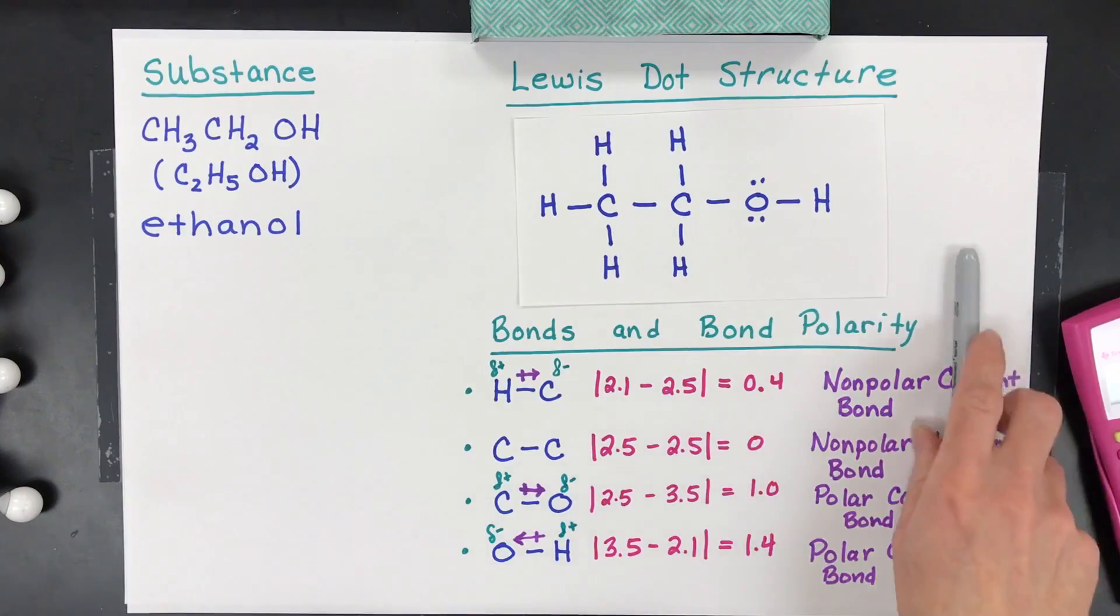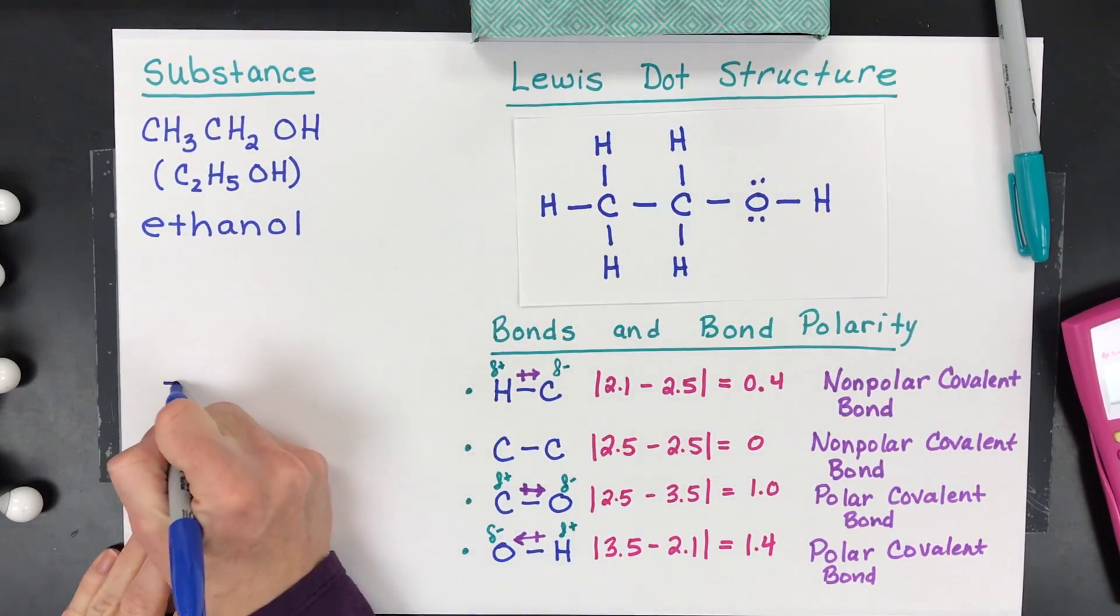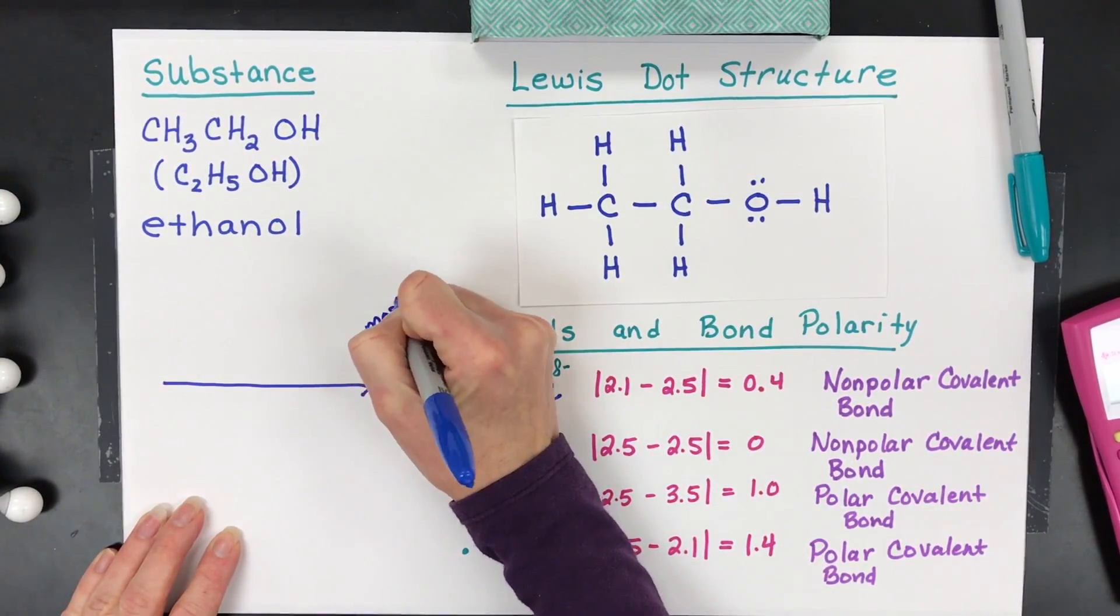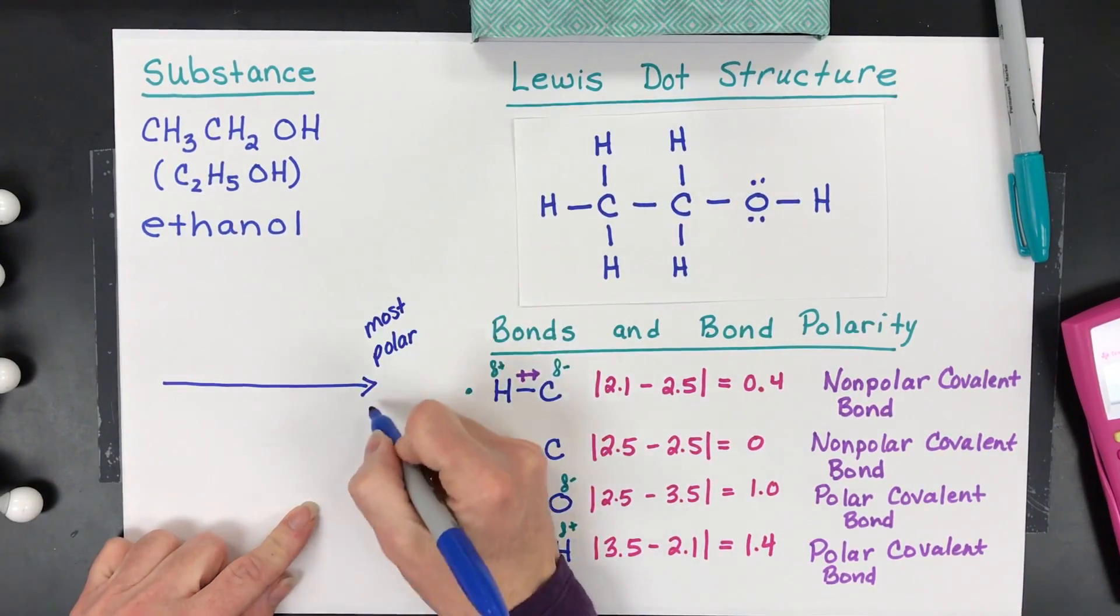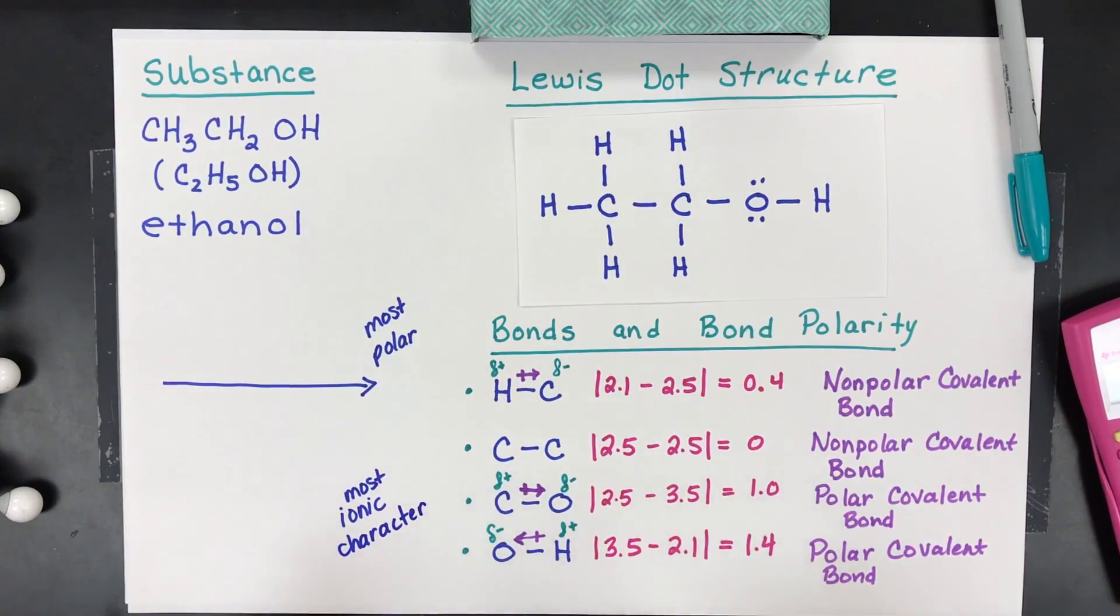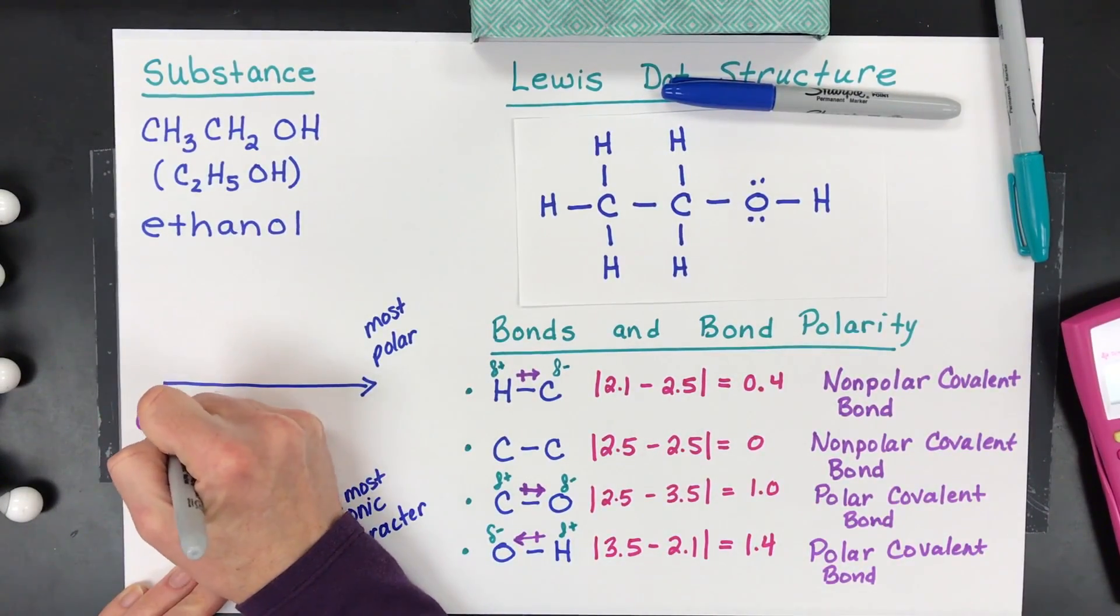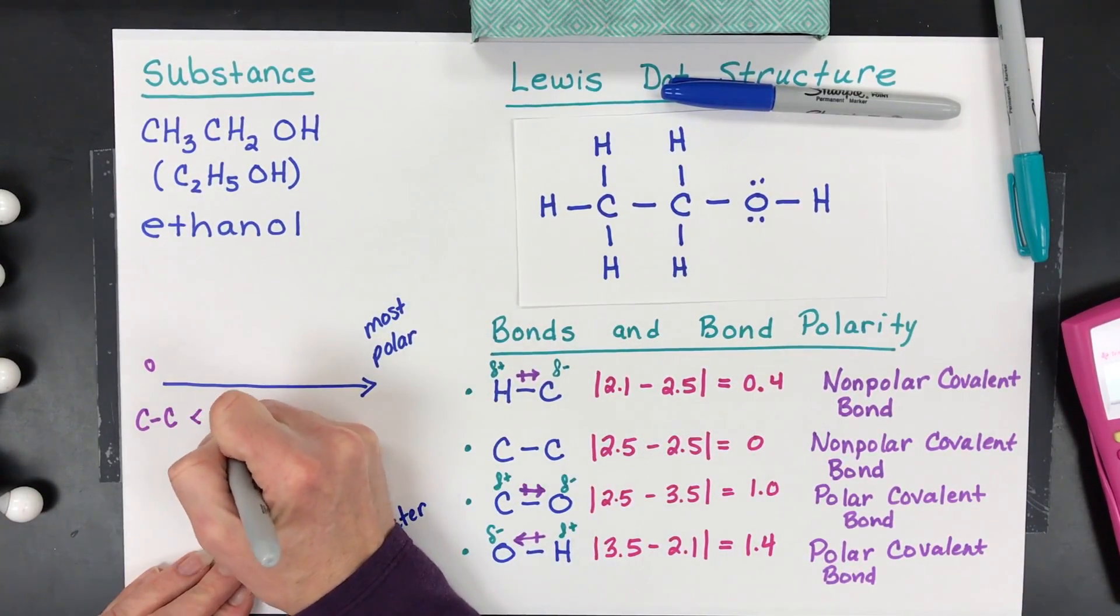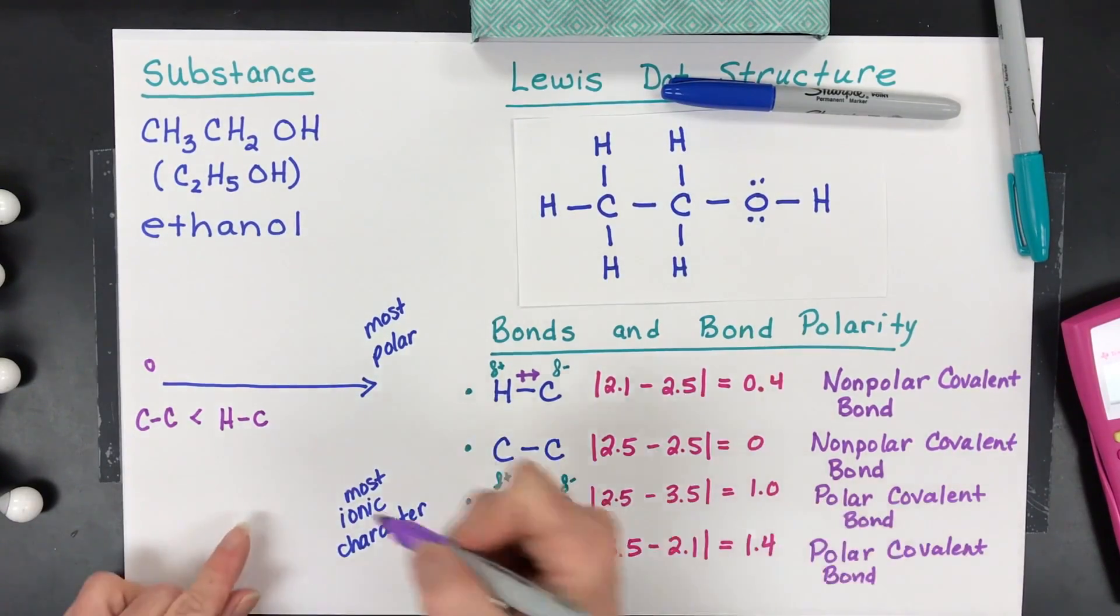Next, you might have to list the bonds in increasing polarity. So you might have to go from the least polar to the most polar. So most polar is going to be over here. So, we've got carbon-carbon being the smallest difference. That was actually zero. And then, who's next? Hydrogen-carbon. Hydrogen-carbon. And then, oxygen and carbon.